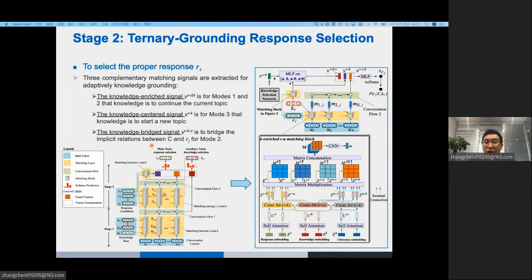The third signal, called knowledge-bridged signal, is to measure the distance between VRK and VCK, where K is used to bridge the implicit relations between C and R. It can be considered to model mode 2. In another perspective,